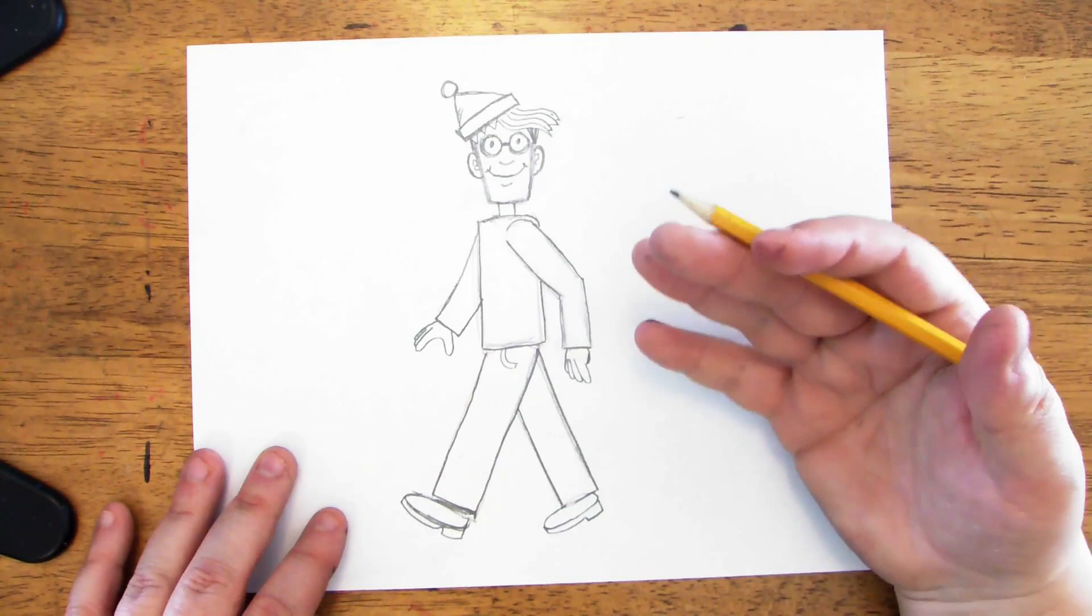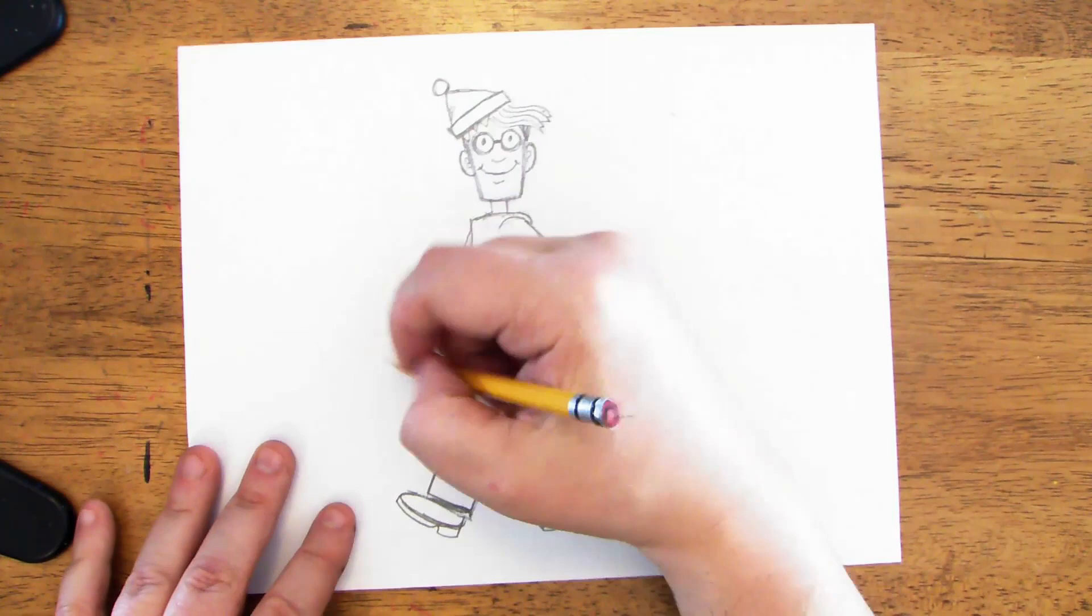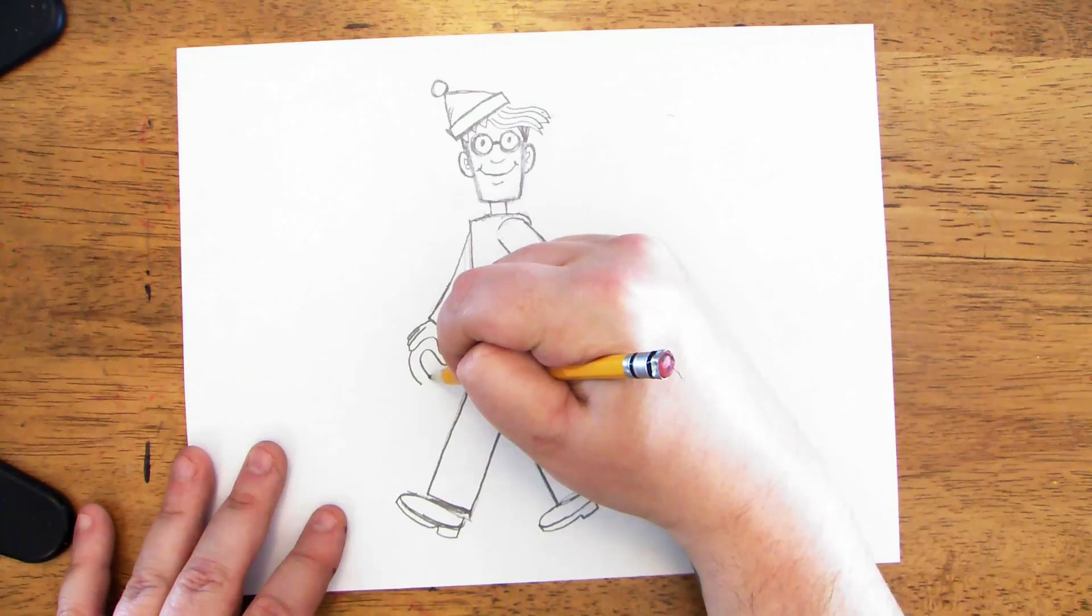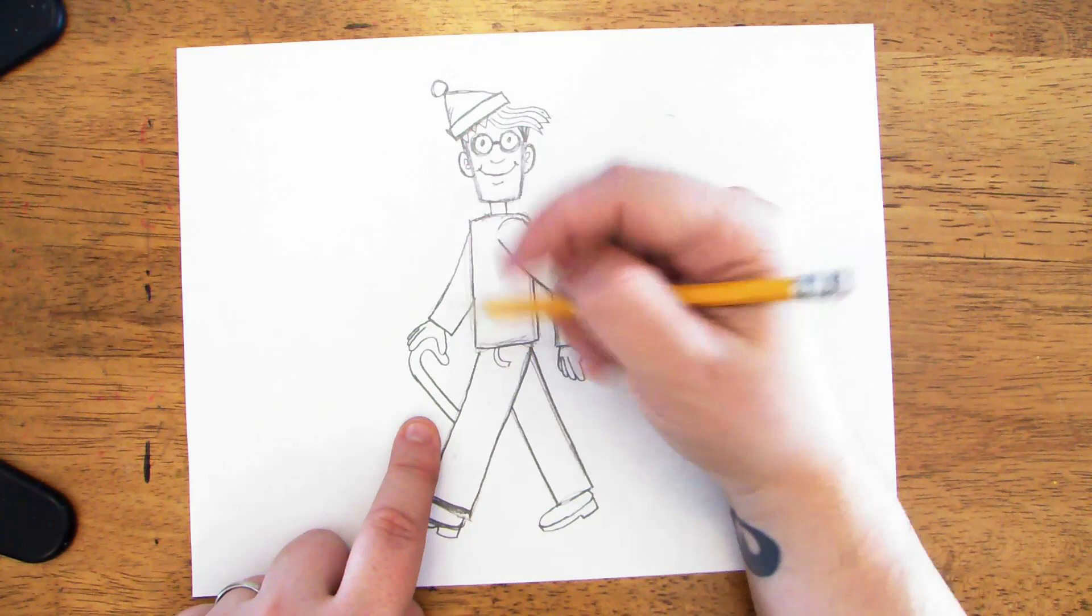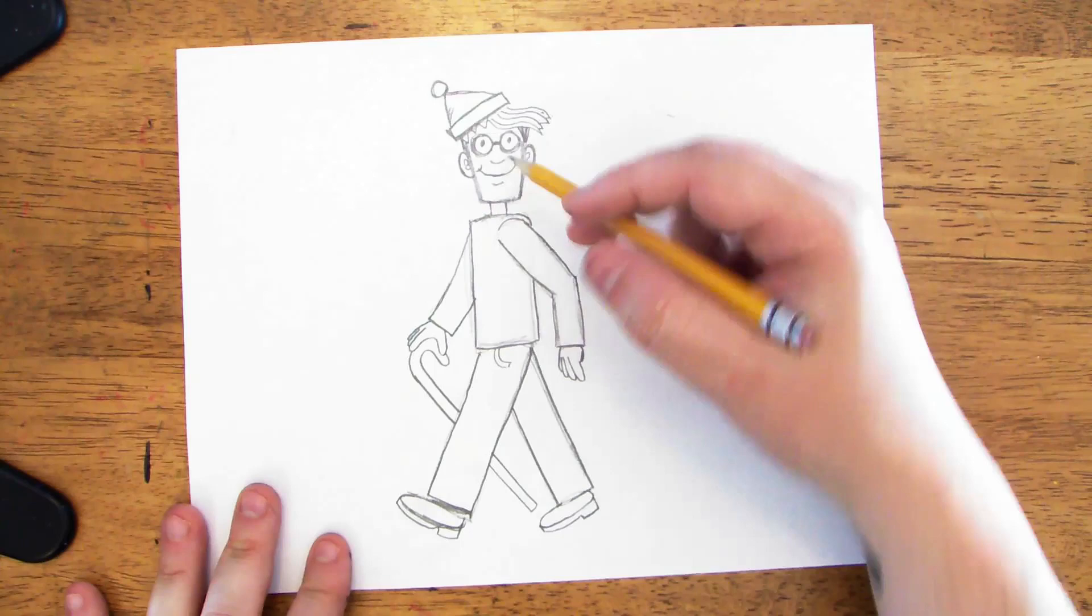Now, in the books, Waldo's typically holding a cane. I'm not sure if he needs it to walk or if it just helps him walk the long distances that he travels. So I'm going to do a curved line up here at the top. And then two straight lines coming down for the cane. Now, when I get to the leg, I'm actually going to stop my lines. I'm going to pretend to draw them and then continue them on the other side. That way, the cane will look like it's behind that leg. That's a trick called overlapping.